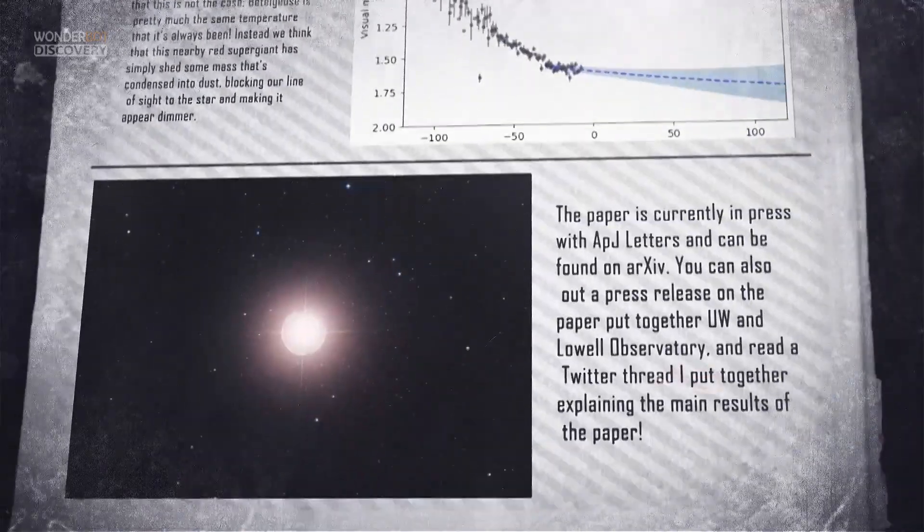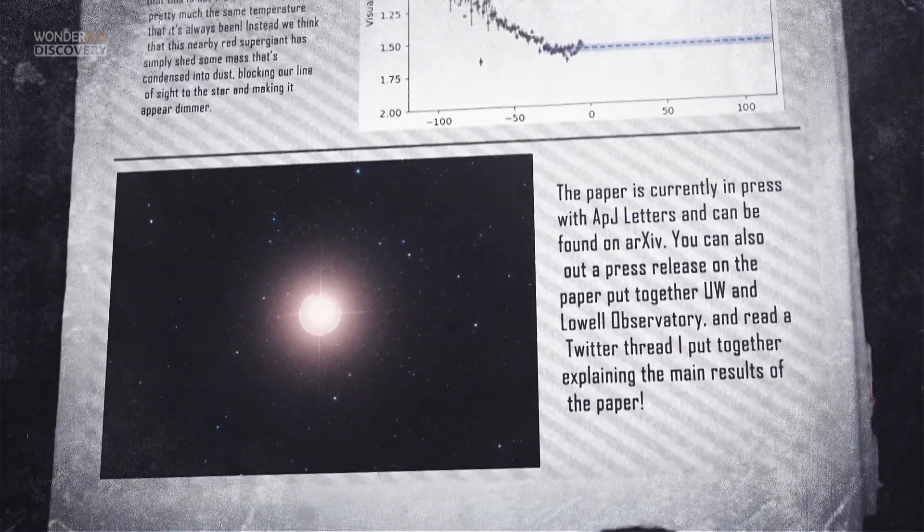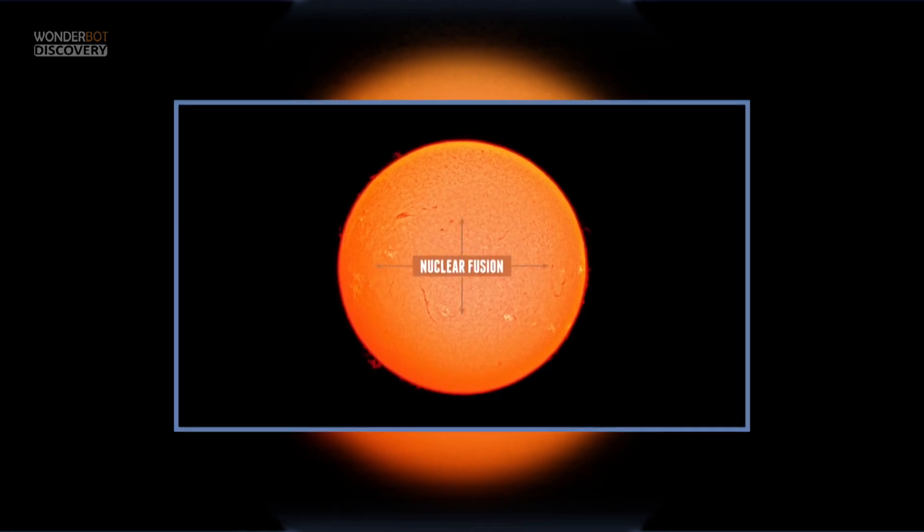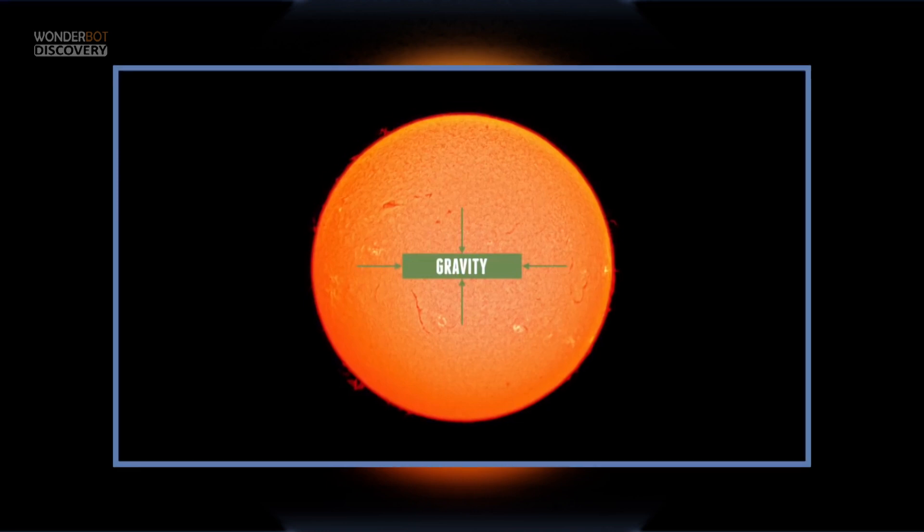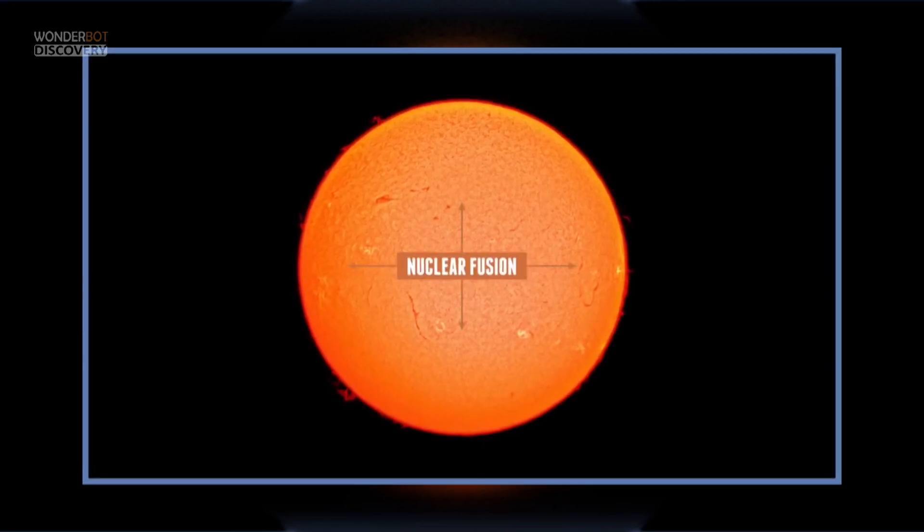We also know that red supergiants have big convective zones on their surfaces, she adds. Hot gas from deep inside the star rises to the surface, where it cools and sinks again. Changes in this circulation could be altering the star's surface temperature, and hence its brightness. Another possible explanation for what's going on.